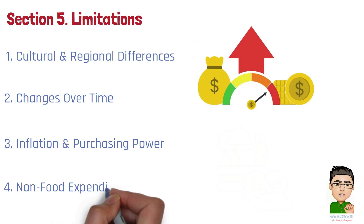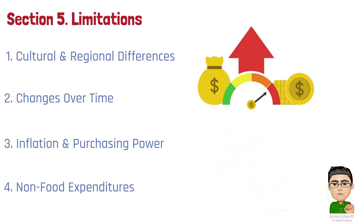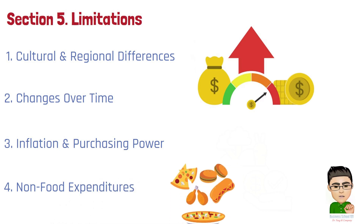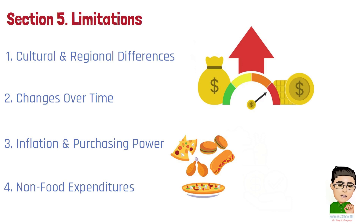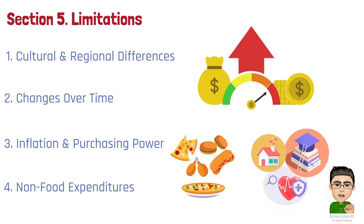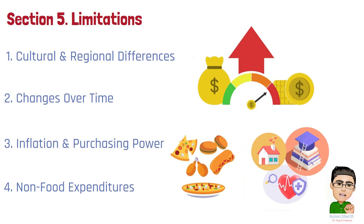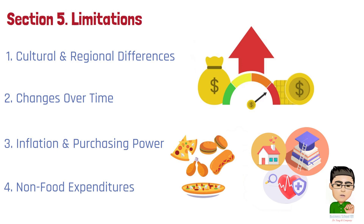Number 4: Non-Food Expenditures. The Engel Coefficient focuses solely on food expenditures and does not consider how money is spent in other important areas such as health care, education, and housing. A household may spend a small proportion of its income on food but a large proportion on other essential items, which could still indicate financial strain or limited discretionary spending.